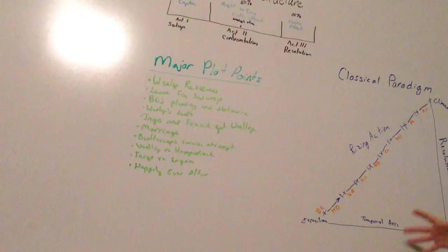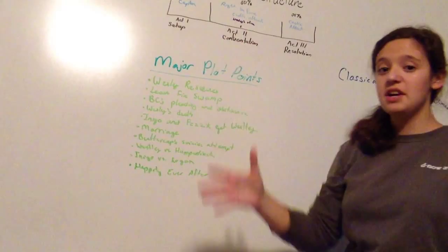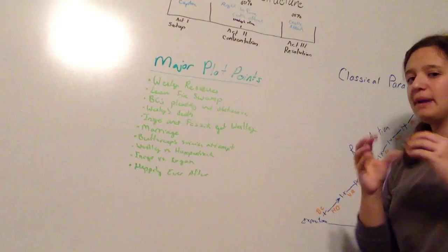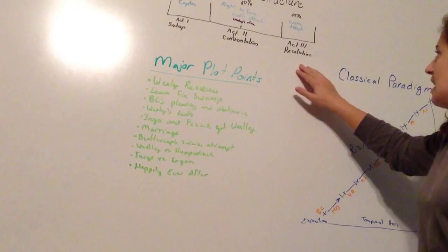So just to briefly walk through some of the extra parts that Giannetti talks about — the first thing is act structure. The first 25%, or the first act, is basically the setup of the movie. The middle part, 50% of the movie, is the confrontation — that's the main meat of the movie, when things start building up against your main character. And then the last 25%, the third act, is the resolution, when everything pans out and gets good again.